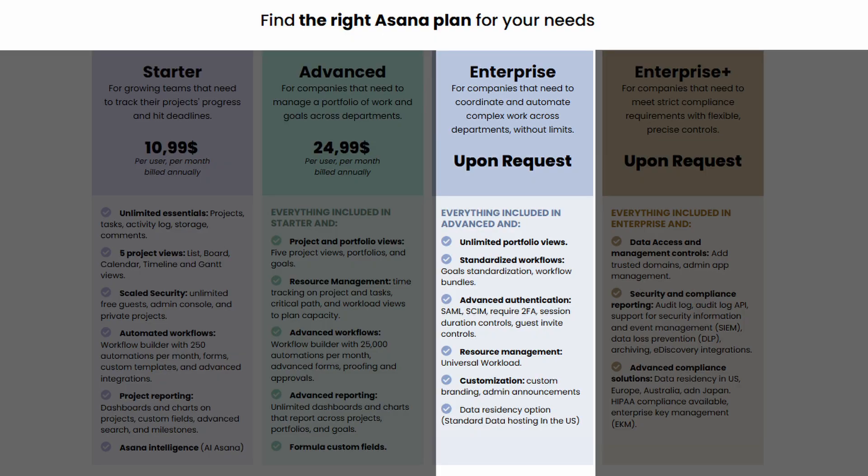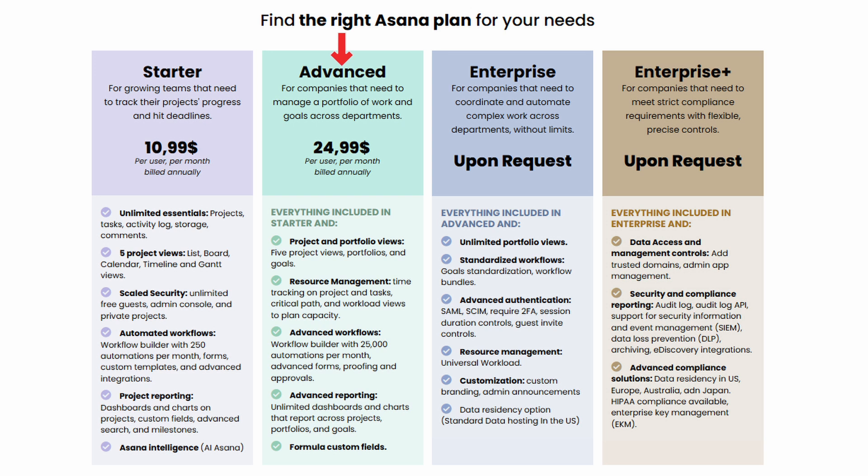Let's have an overview of the Asana enterprise plan and discuss some of the features it contains. As a reminder, Asana is available as a free plan as well as Starter, Advanced, Enterprise, and Enterprise Plus — those are known as the new Asana plans, compared to the legacy plans which were Premium, Business, and Enterprise. Those new plans have been introduced a couple of months ago; today is actually August 2024.